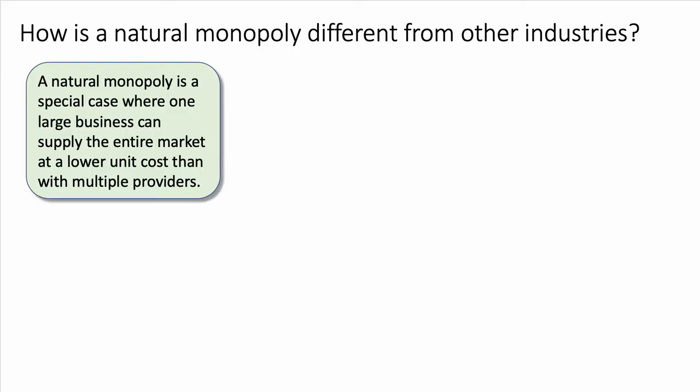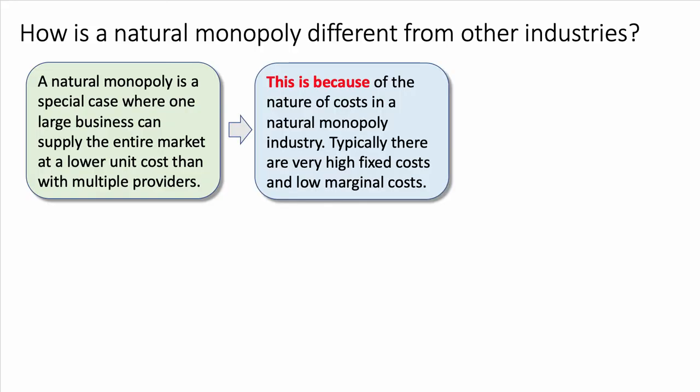Start off with a good definition to build your chain of reasoning. A natural monopoly is a special case where one large-scaled business can potentially supply the entire market at a lower average cost than if you had multiple providers. This is because of the nature of cost in a natural monopoly industry — typically in these kinds of sectors there are very high fixed costs of production but low marginal costs.